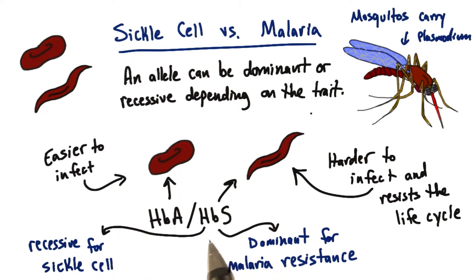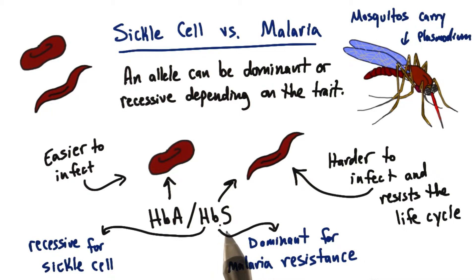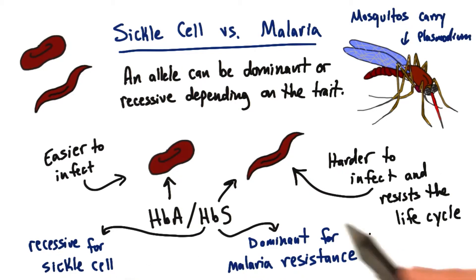Think about it — we have one allele, the HBS allele, but there are two different traits. We can either think about the sickle cell anemia trait or the malaria resistance trait. In one case, this allele is recessive because you need two copies before you really see the effect. But in the case of malaria resistance, only one copy is enough to resist plasmodium infection, making it a dominant allele.